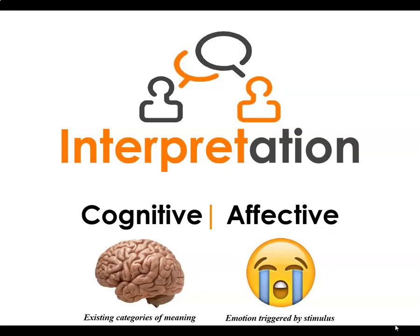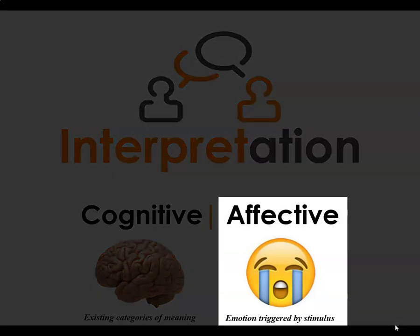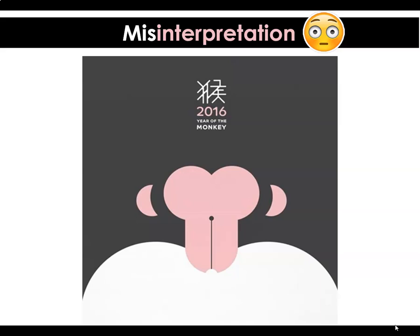The last stage is interpretation, and this is probably where marketers spend the least amount of time. We have interpretation based on existing categories of meaning and memories we can recall, or we might have an affective emotional reaction triggered by a stimulus. Interpretation tends to be relative rather than absolute, and subjective rather than objective — rarely ever black and white. Misinterpretation is something marketers should try to consider, plan for, and avoid at all costs. A humorous but somewhat lewd example is the logo created for the 2016 Year of the Monkey.